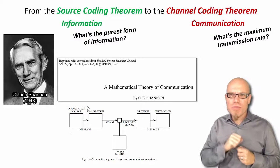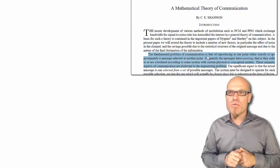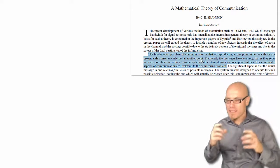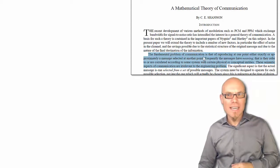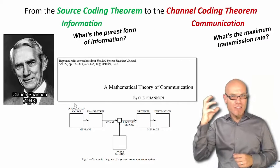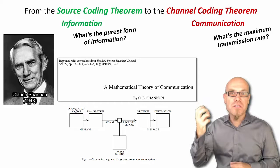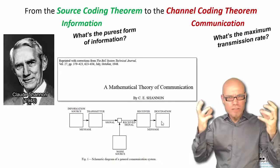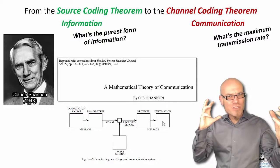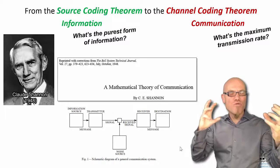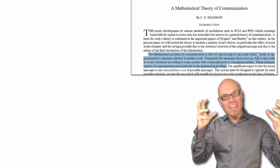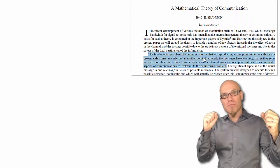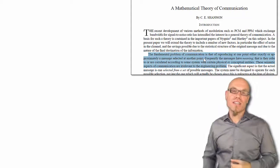Shannon said the fundamental problem of communication is that of reproducing at one point either exactly or approximately a message selected at another point. Basically, if you have a source that imagines a house on the beach, and then you imagine a house on the beach — how much do these two images in our heads overlap? That's the problem of communication: replicating at one point what is sent at another. He really made a science out of it by quantifying what information and communication are.